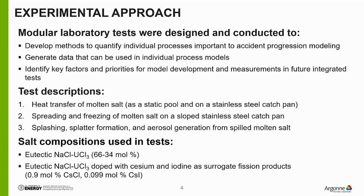In FY22, we conducted three types of tests. The first looked at the heat transfer behavior of molten salt both as a static pool and on a sloped stainless steel catch pan. The second looked at spreading and freezing of molten salt on a sloped stainless steel catch pan. The third looked at splashing, splatter formation, and aerosol generation from spilled molten salt. In FY22, we used eutectic sodium chloride and uranium trichloride as our salt composition, compared to FlyNaK used in the first year. We also used salt doped with cesium chloride and cesium iodide as surrogate fission products for the aerosol generation tests.